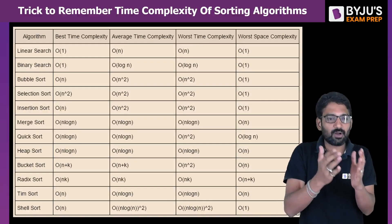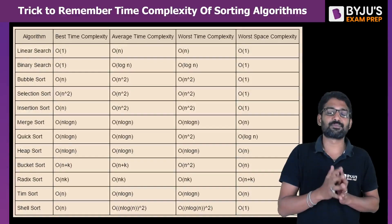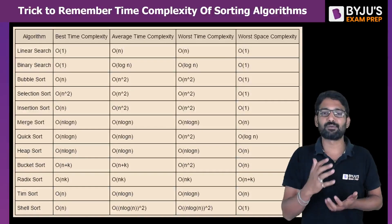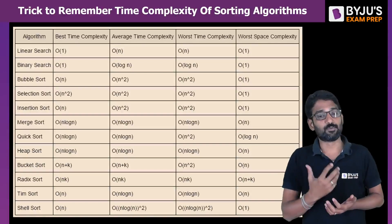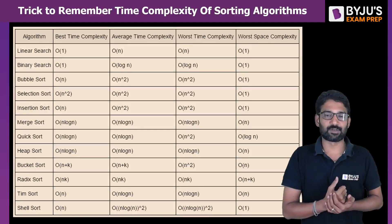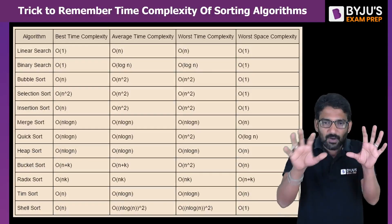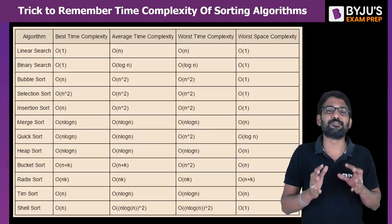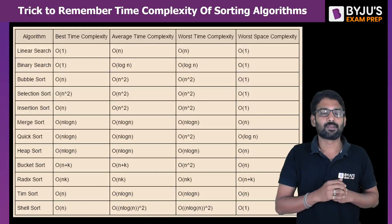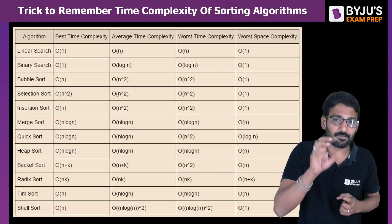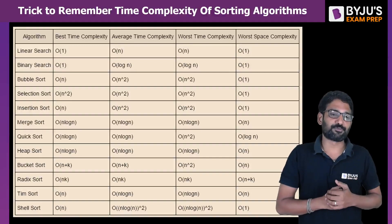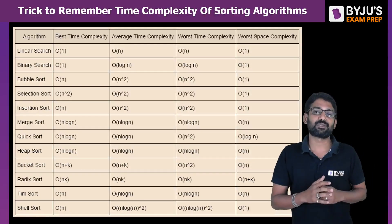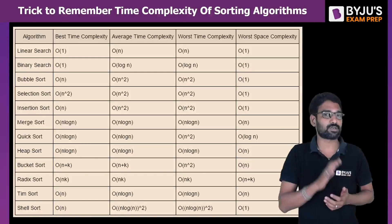All the sorting algorithms have time complexities in Big O notation because we represent the worst case generally. This whole table can be a little difficult and confusing to remember, and for GATE, in these sorting algorithms, you majorly have to remember six sorting algorithms.